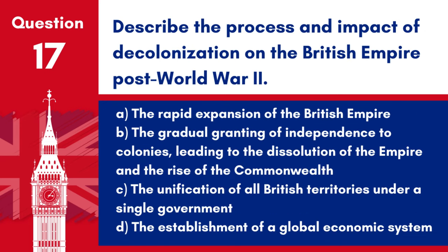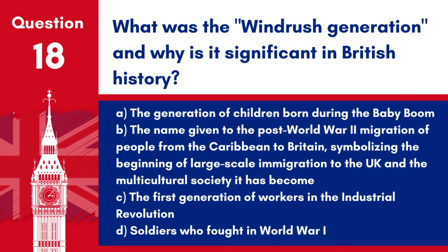Question 17: Describe the process and impact of decolonization on the British Empire. a. The gradual granting of independence to colonies, leading to the dissolution of the empire and the rise of the Commonwealth. c. The unification of all British territories under a single government. d. The establishment of a global economic system. Answer: a. The gradual granting of independence to colonies, leading to the dissolution of the empire and the rise of the Commonwealth. The decolonization process marked the end of the British Empire as a global colonial power and the beginning of a new era of partnership within the Commonwealth.